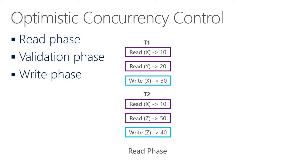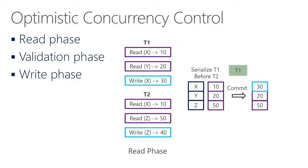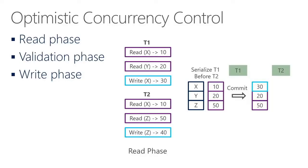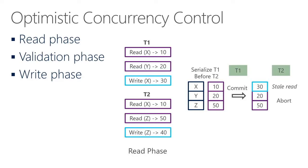Here is an example of how a transaction in OCC can abort. We have two transactions T1 and T2, where T1 reads X and Y and modifies X, and T2 reads X and Z and modifies Z. In the read phase, they read data to make updates in their local workspace. In the validation phase, T1 checks for conflicts — there are none, so it commits and updates X to 30. When T2 validates, because X has been updated to 30, T2 has a stale read and must abort.